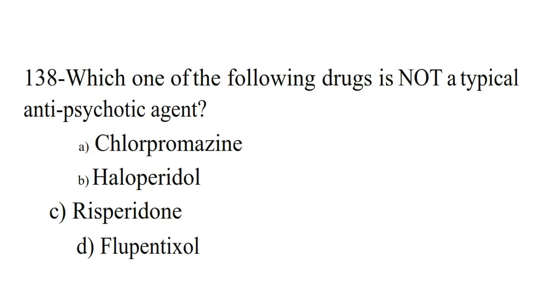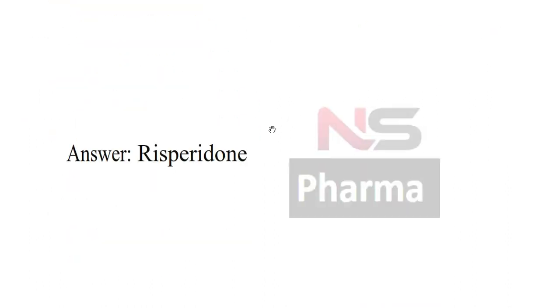Next question. Which one of the following drugs is not a typical antipsychotic agent? Option A Chlorpromazine, Option B Haloperidol, Option C Risperidone, Option D Flupentixol. Answer: Risperidone.